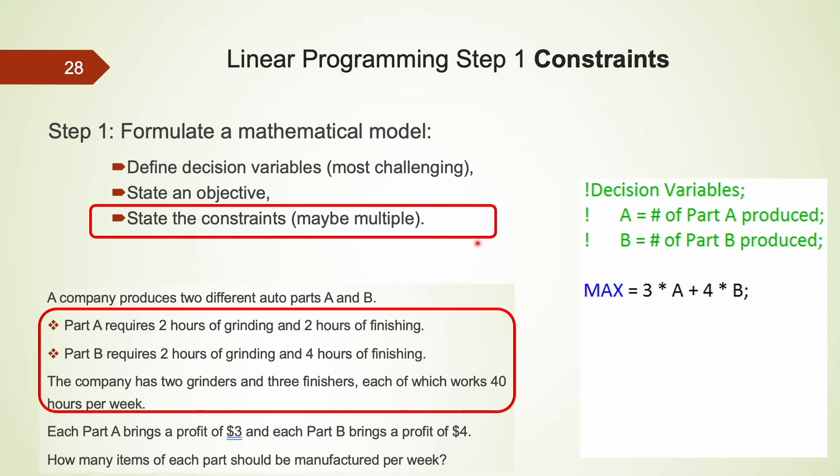The last part of a problem formulation is to state the constraints. The constraints are usually more than one. For this particular problem, the constraints are related to machine hours. In order to maximize profit, the company definitely wants to produce as many units of A and units of B as possible. But this production plan is not feasible because this company only has two grinders that work 40 hours each and three finishers. We have to make sure the production plan will not exceed the maximum machine hours. How do we express that using mathematical equations?